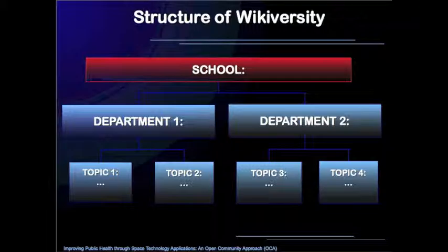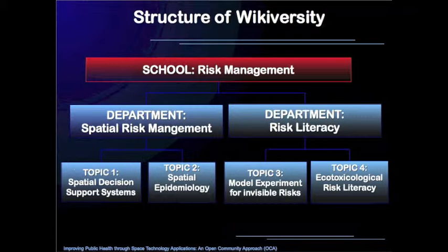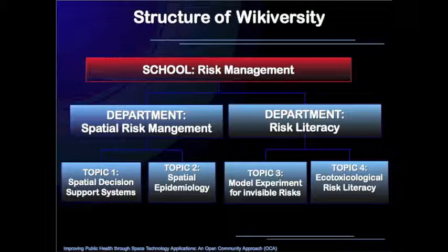The structure of Wikiversity starts from a school level; the subdivisions are departments, and these are subdivided by topics. A school could be a representative of a real school, a university, or an environment for non-formal training — for example, for farm workers.